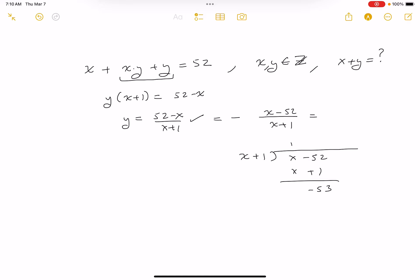All right, let me write carefully. I get 1 and then minus the remainder, which is minus 53 over the divisor, which is x plus 1. So I'm going to say y equals 53 over (x plus 1) minus 1.